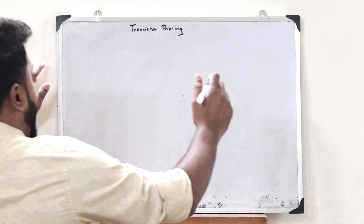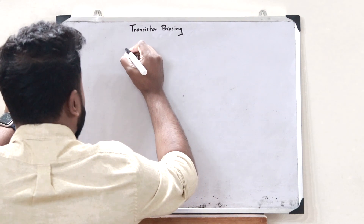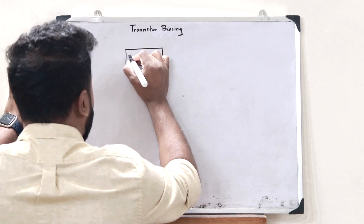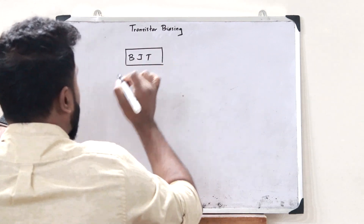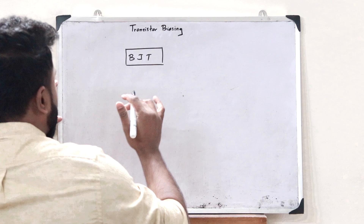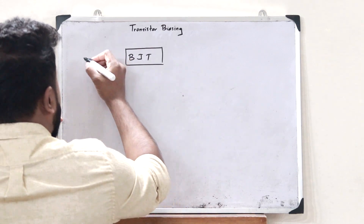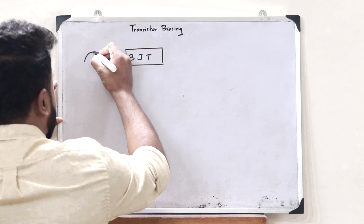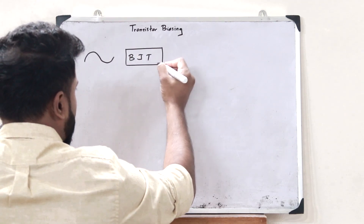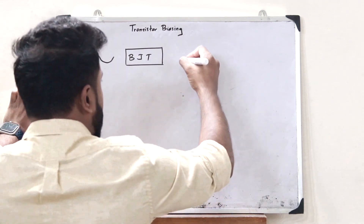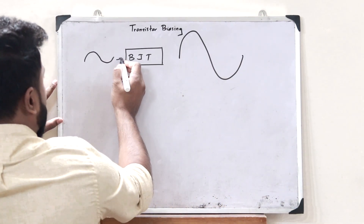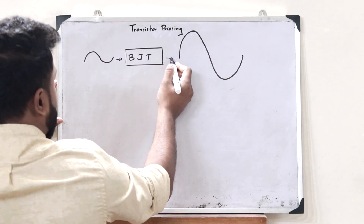We all know for a fact that a particular BJT, or bipolar junction transistor, is used for the purpose of amplifying a time-varying signal. So if we are giving a particular time-varying signal onto a bipolar junction transistor, then we know for a fact that this amplifies this particular input signal.